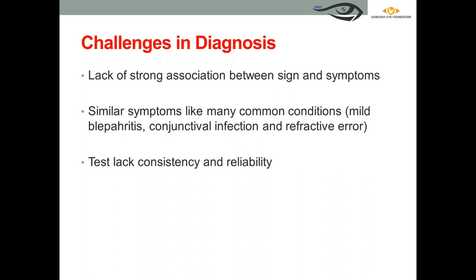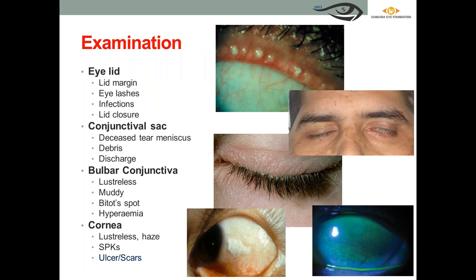Dry eye symptoms overlap with conditions like blepharitis, conjunctival infection, and refractive error. There is also a lack of consistency and reliability in diagnostic tests. When examining a patient, thoroughly inspect the eyelids, conjunctiva, and cornea. Look at the eyelid margin, eyelashes, lid closure, gland disorders, and signs of blepharitis, as these could be possible contributors to dry eye.